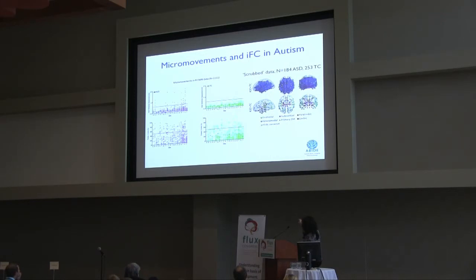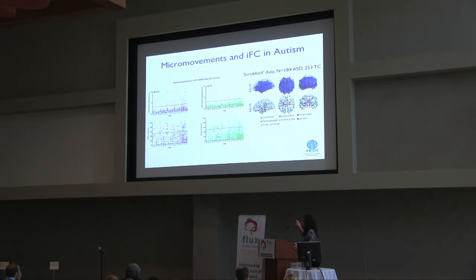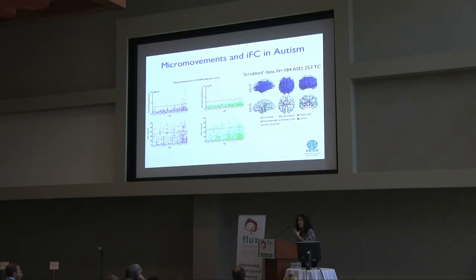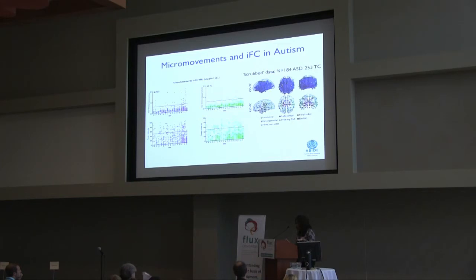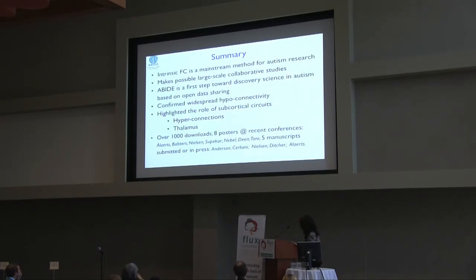Mean framewise displacement was used as a covariate in the primary analysis. We also used the percentage of high-movement frames for secondary analysis on scrubbed data. Numbers decreased because we had to exclude a large chunk of individuals. There were discussions in the consortium about whether to share only good data or all data — we emphasized the importance of sharing even data that might seem low quality today, as it could facilitate development of new algorithms. Importantly, results in the smaller scrubbed sample were largely similar to the primary analysis.